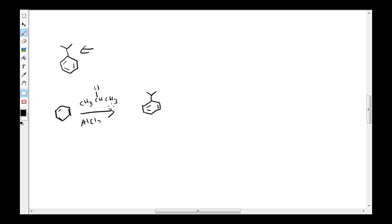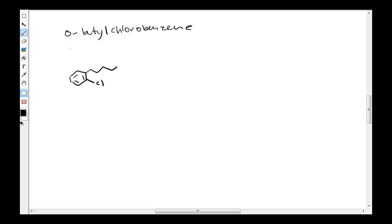Now, in the upcoming examples, we're going to have to deal with more stuff about like, is this an ortho para or a meta director? We'll get to that. It's not as hard as you think. And I'll explain it as thoroughly as I possibly can. In this example, we have to turn benzene into o-butylchlorobenzene.